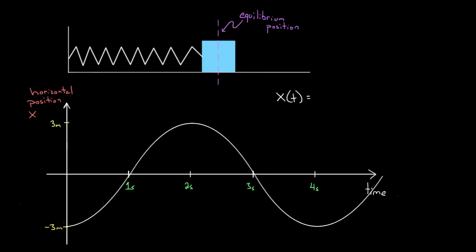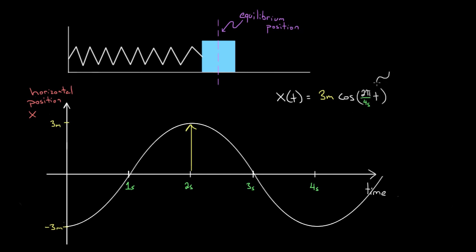The amplitude is three meters—that's the maximum displacement from equilibrium. So three meters out front, then cosine because it starts at an extreme value. Then I need two pi over the period. I look at my graph: from minimum back to minimum took four seconds. So it'd be two pi over four seconds, then little t. What do I plug in for little t? I don't—this is the variable.